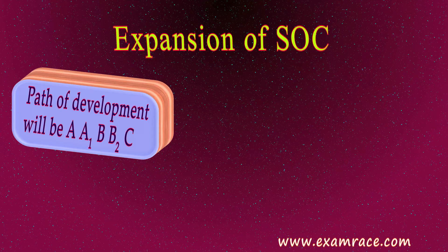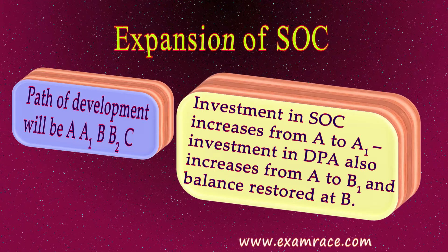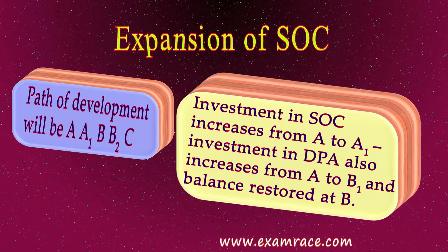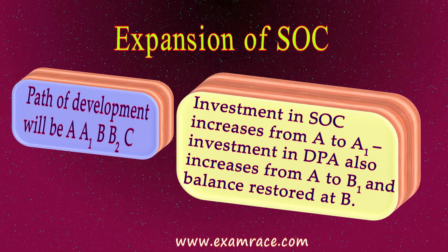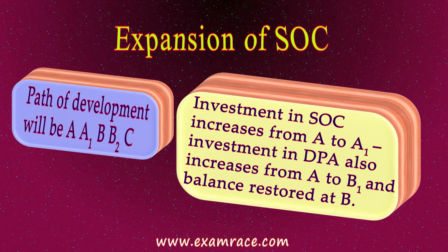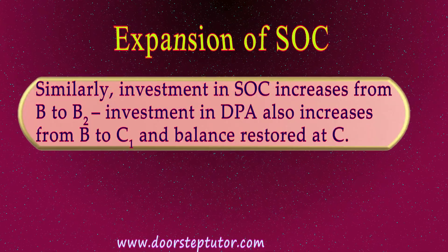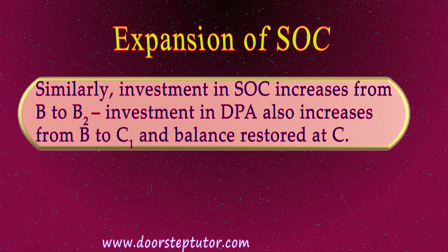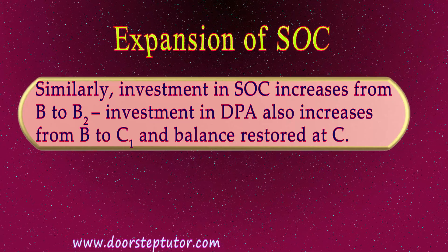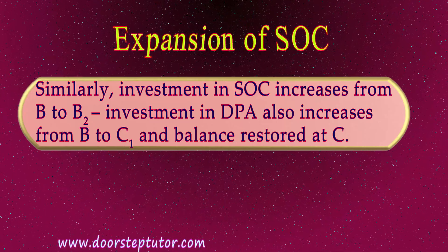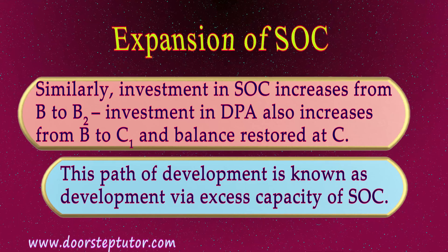If we expand through SOC, the path of development will be A→A1→B→B2→C. When investment in Social Overhead Capital increases from A to A1, it will induce investment in DPA from A to B1 until the balance is restored at B, shifting the isoquant curve from 1 to higher isoquant 2, implying a higher level of national output. Again, when investment in SOC is further raised from B to B2, that induces investment in DPA from B to C1, and balance is restored at C on a higher isoquant, giving the economy a higher national output level.